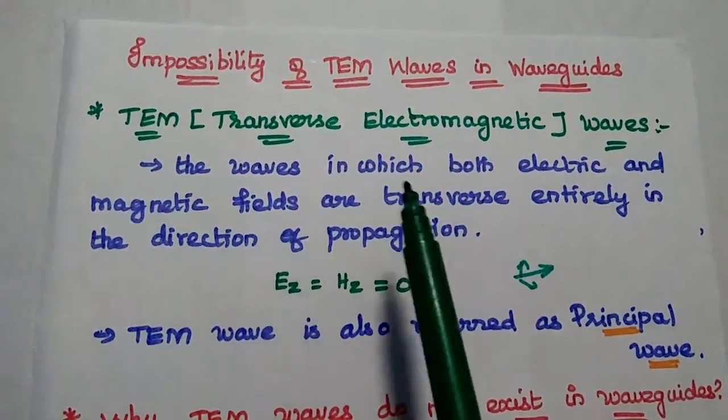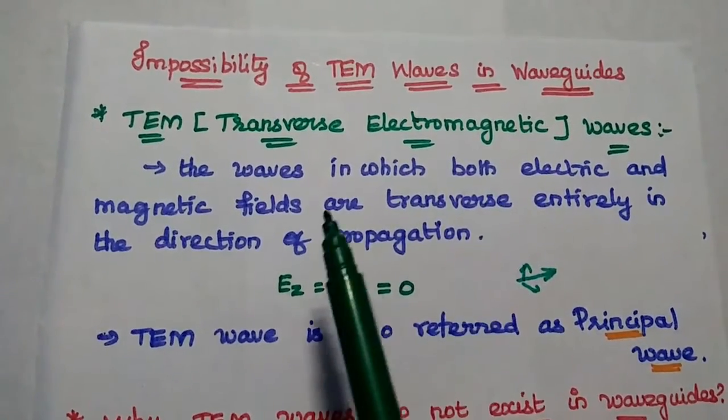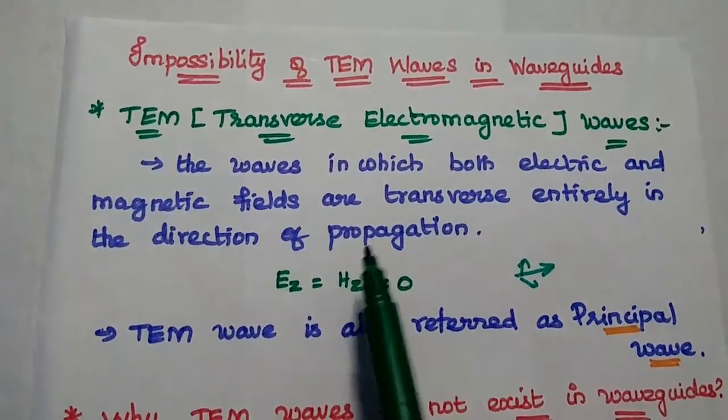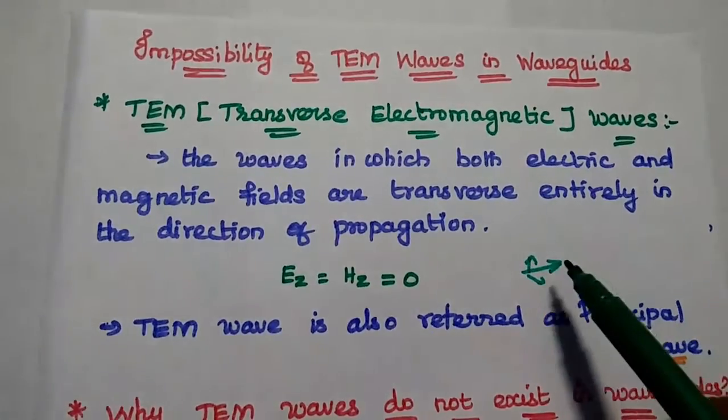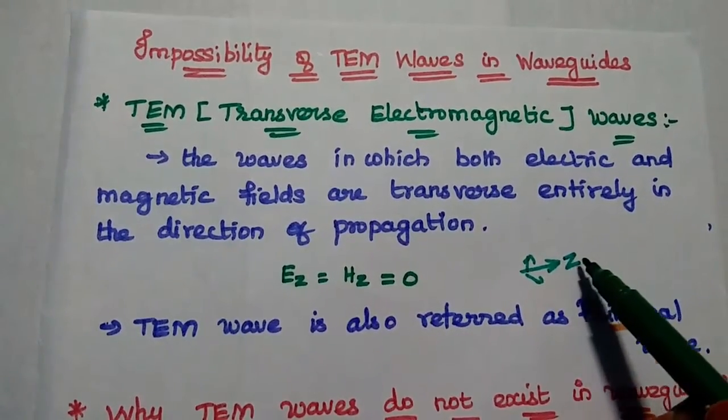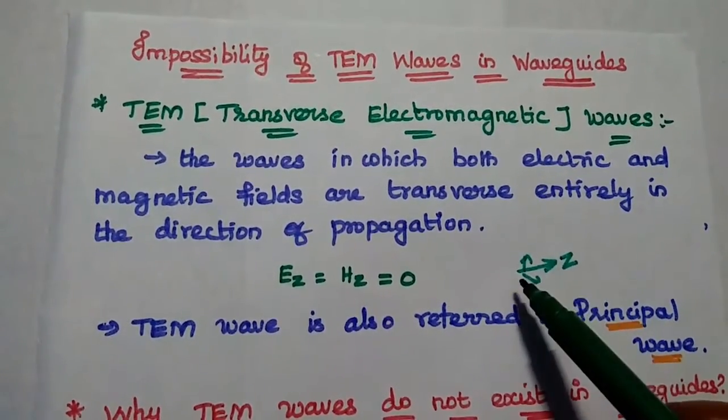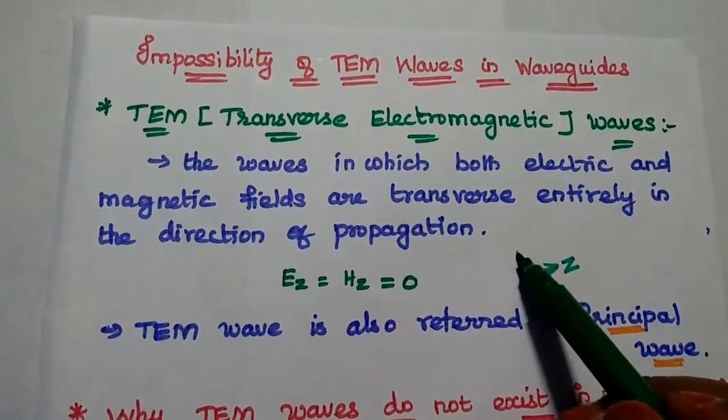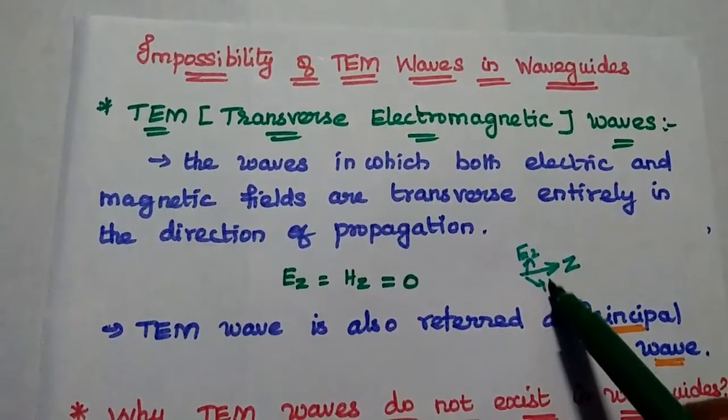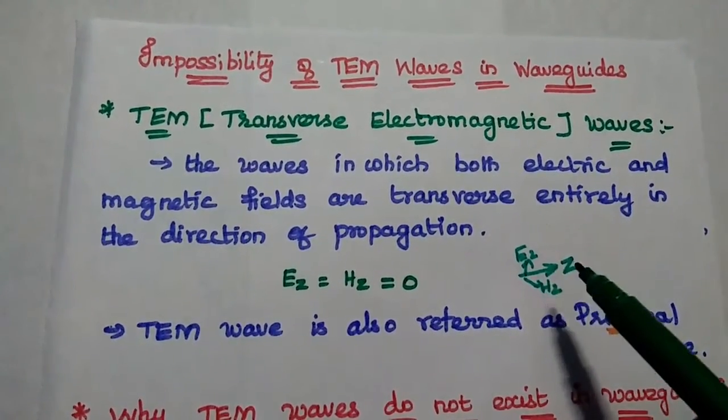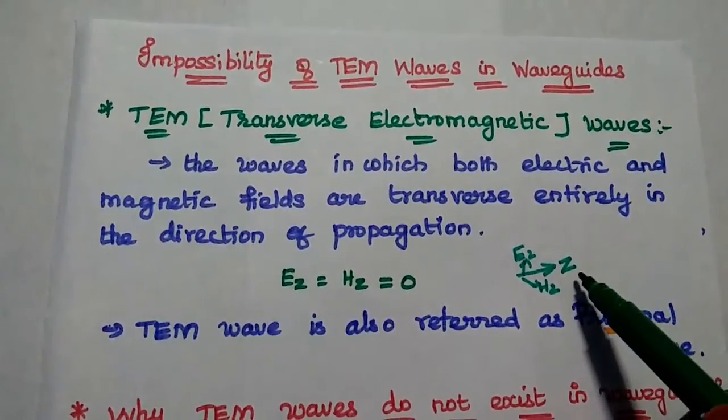These are the waves in which both electric and magnetic fields are transverse entirely in the direction of propagation. If you are going to consider the wave to propagate in this z direction, then the axial components of this wave, that is Ez and Hz, both become zero. There is no axial component in the direction of propagation.